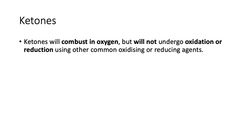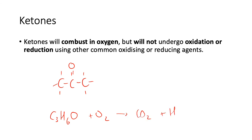The only chemical reaction ketones undergo is combustion in oxygen. Taking propanone as an example: C₃H₆O plus O₂ combusts to give CO₂ and H₂O. Balancing the equation gives three CO₂ and three H₂O, requiring four O₂. Ketones can be combusted — the water produced is gaseous. Importantly, ketones will not undergo oxidation or reduction reactions.